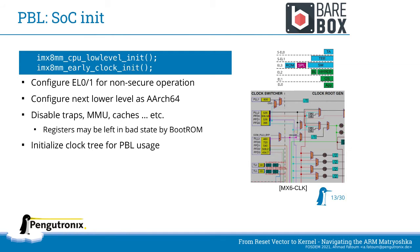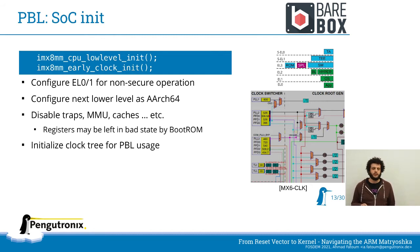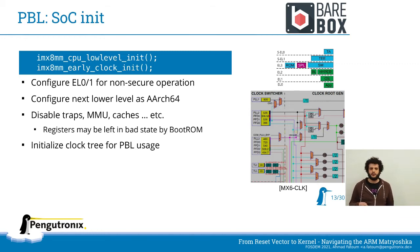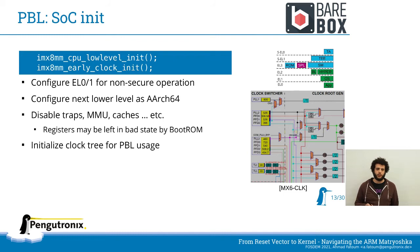Then you initialize the clock tree for PBL usage — similar to what we saw at boot ROM level but accessing more hardware. You have PLLs, then muxes that select which input is taken as output, then dividers (e.g., turning 20 MHz into 10 MHz), then gates that allow disabling parts of the clock tree. All of that needs to be configured for the devices actually used.